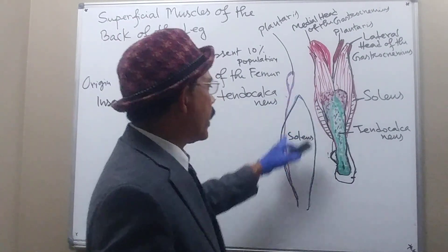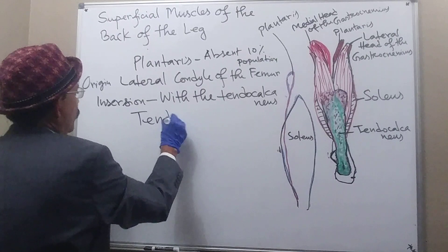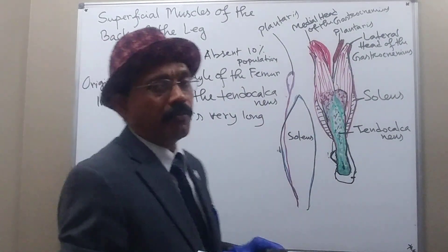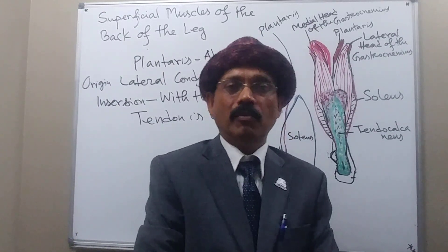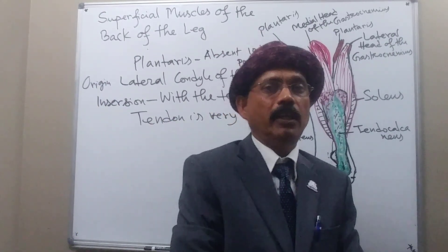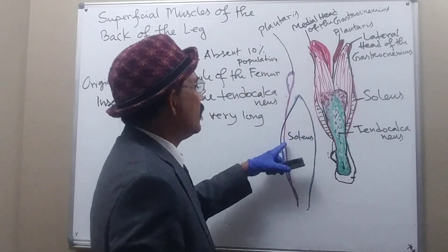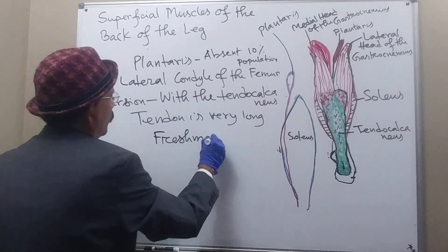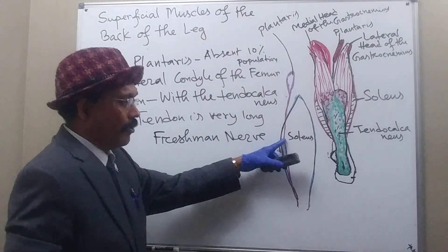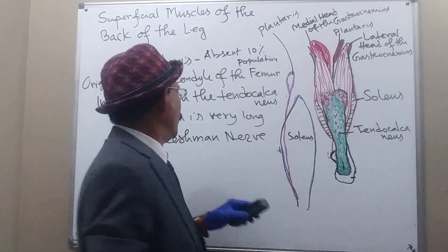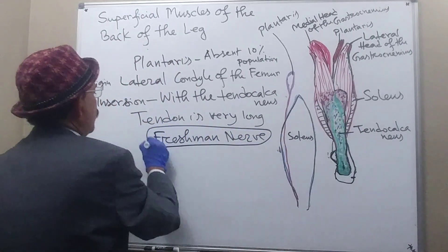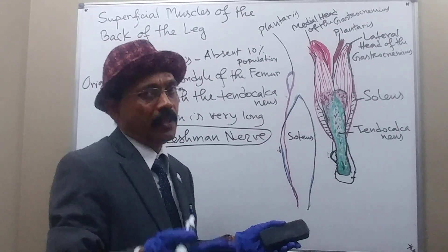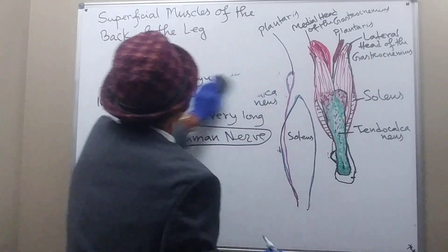The plantaris has a very long tendon. Sometimes first-year medical students — called freshman students in the United States — may think this tendon is a nerve and may cut it, which is why it is nicknamed the 'freshman nerve.' It is not a nerve; it is a tendon. Its color is white because it is collagen, similar to the color of a nerve, which makes it confusing.